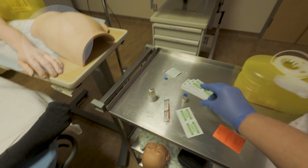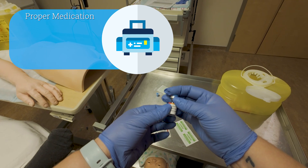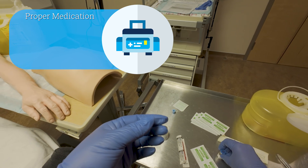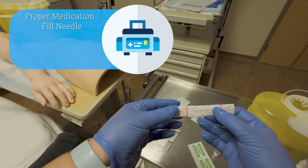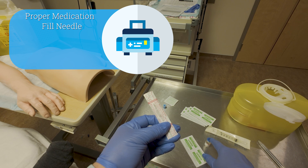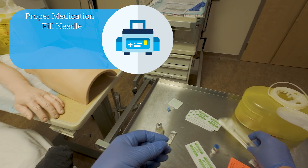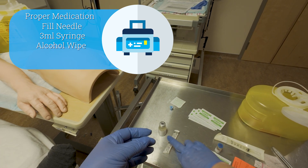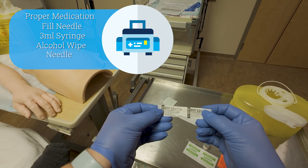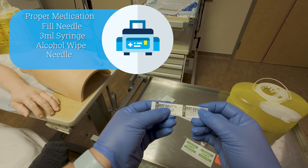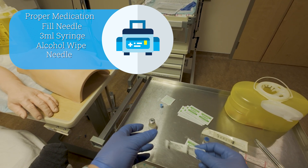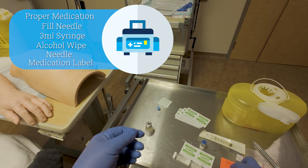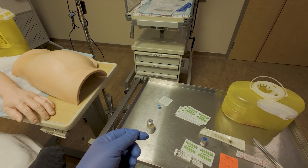Today we're going to do oxytocin, so we're going to make sure we have the proper medication and all of our supplies. We have 10 international units of oxytocin for active management of the third stage. We have a fill needle to draw our medication out of the vial, a three-mil syringe, an alcohol wipe to prepare the skin, and a needle appropriate for an adult — the 22 gauge, one and a half inch.